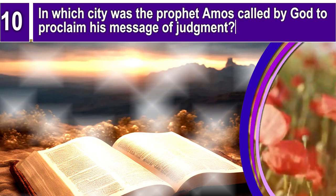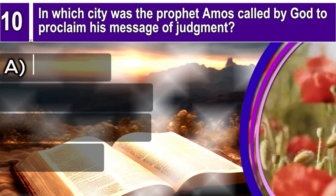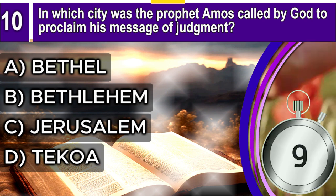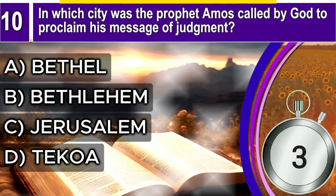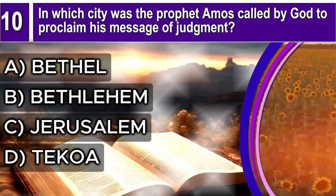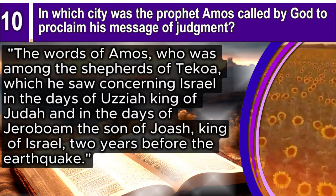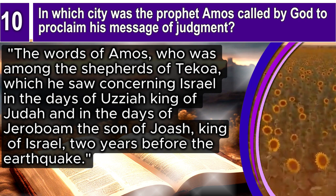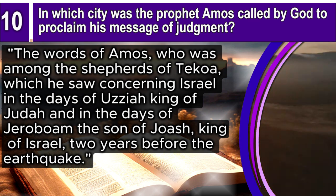Question 10. In which city was the prophet Amos called by God to proclaim his message of judgment? A. Bethel, B. Bethlehem, C. Jerusalem, D. Tekoa. The correct answer is D. Tekoa. Amos 1, verse 1 says: The words of Amos, who was among the shepherds of Tekoa, which he saw concerning Israel in the days of Uzziah king of Judah, and in the days of Jeroboam the son of Joash, king of Israel, two years before the earthquake.